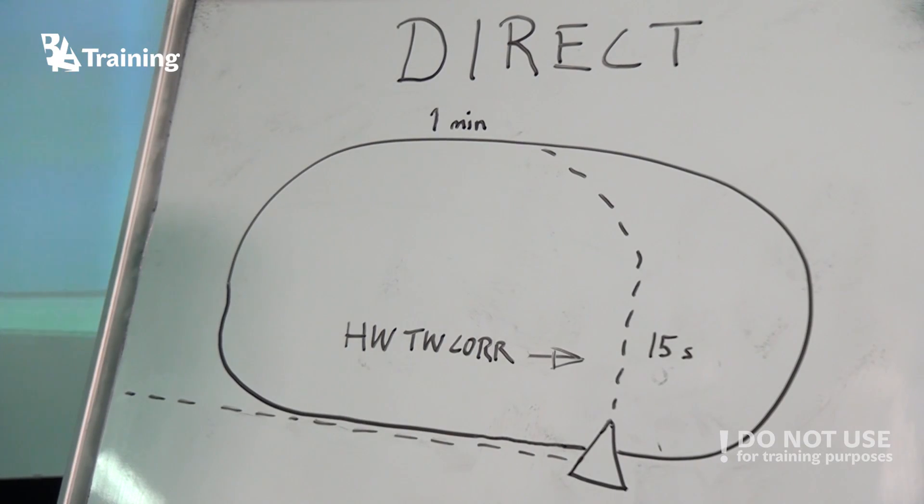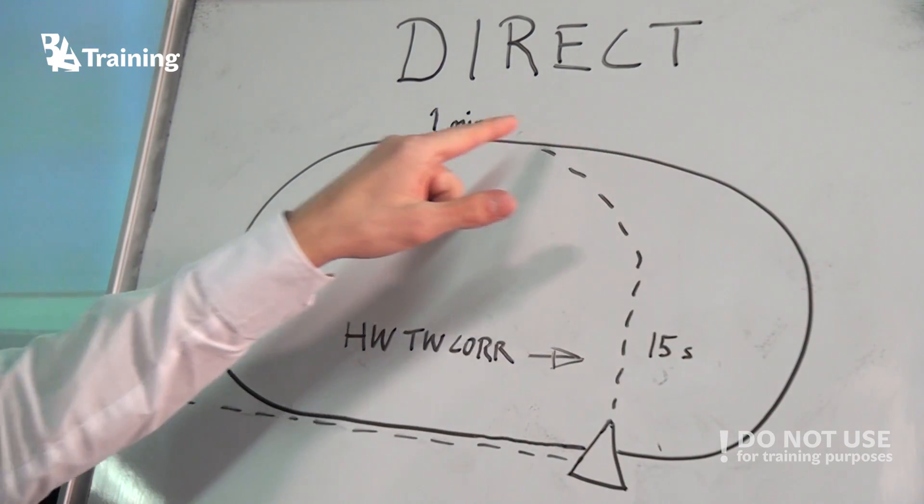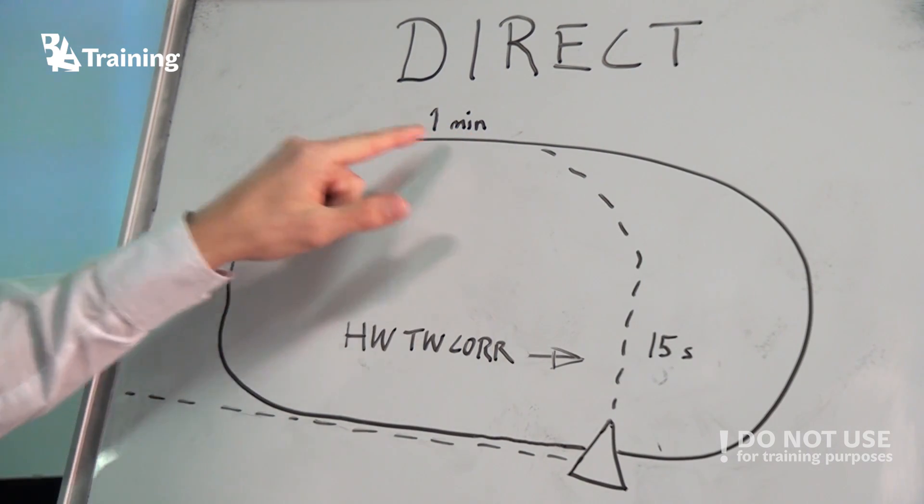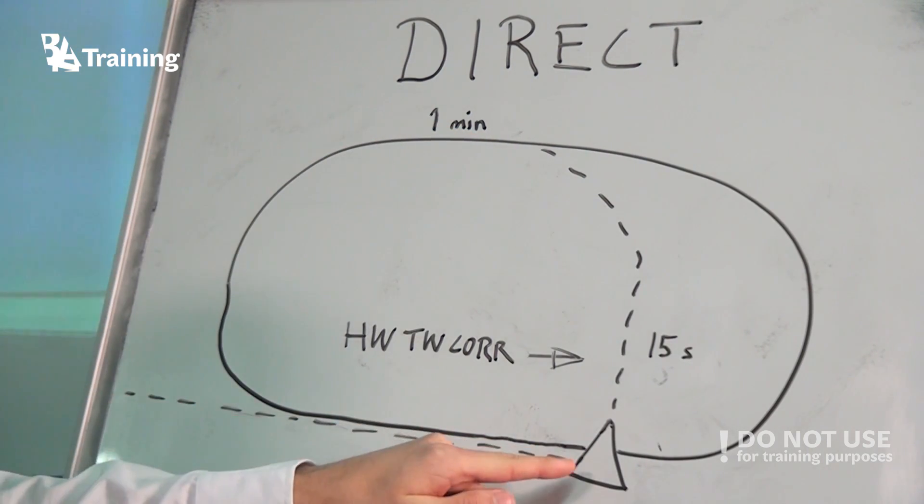The direct entry is very easy. If you come from this direction, you just proceed to the fix and start the turn, fly the outbound leg for one minute, then you turn in towards the fix again and start your holding.